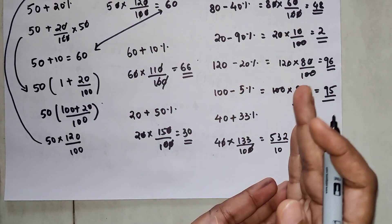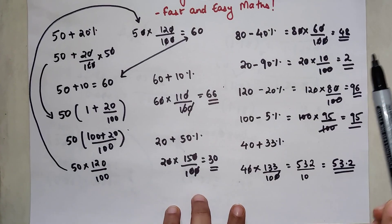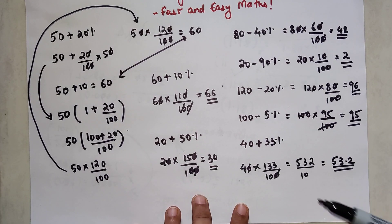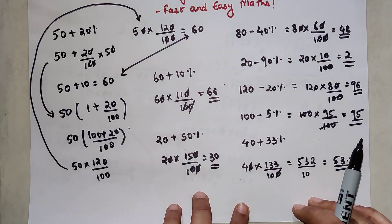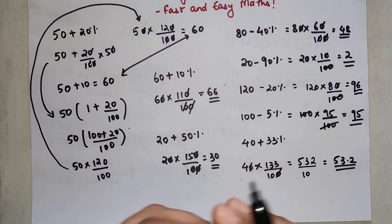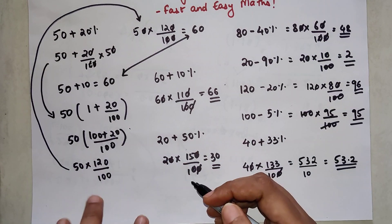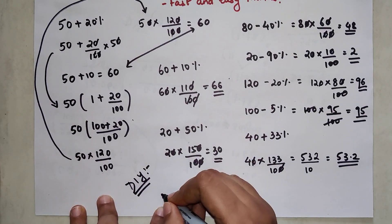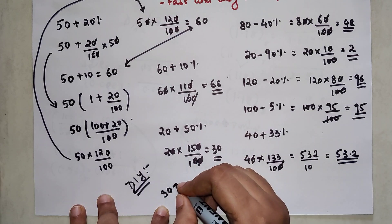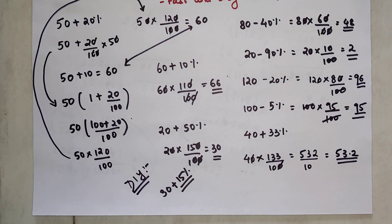Whenever you have 10, 100, or 1000 in your denominator, do not reduce it unless zeros are cancelling outright. The more steps you add, the higher the probability of making mistakes. Now, time for your DIY: what will be the final answer when you increase 30 by 15 percent? Let me know your answers in the comment section. That's it for today — see you in the next video!